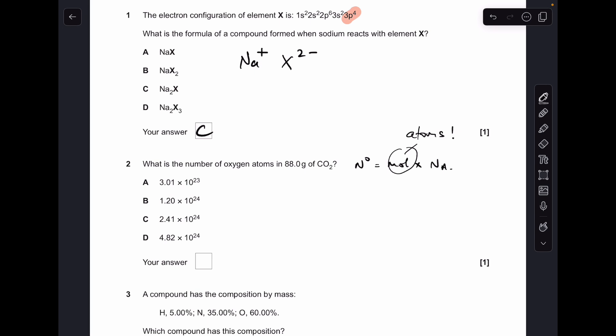Number 2, so the formula we use to calculate the number of particles is moles times Avogadro's number, and just be careful, this is asking us to calculate the number of oxygen atoms. So the first thing we need to do is work out how many moles of CO2 molecules we've got. So there's 2 moles of carbon dioxide molecules, but remember, every mole of CO2 has 2 moles of oxygen atoms, so there's actually 4 moles of oxygen atoms. So we multiply Avogadro's number by 4, and we get 2.41 times 10 to the 24, which is option C.